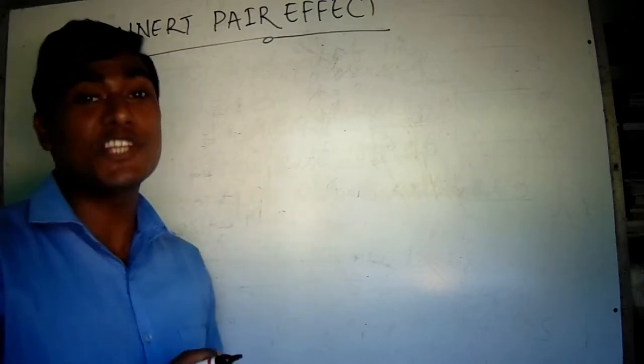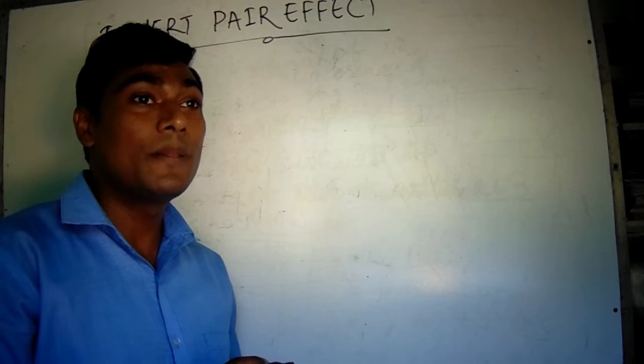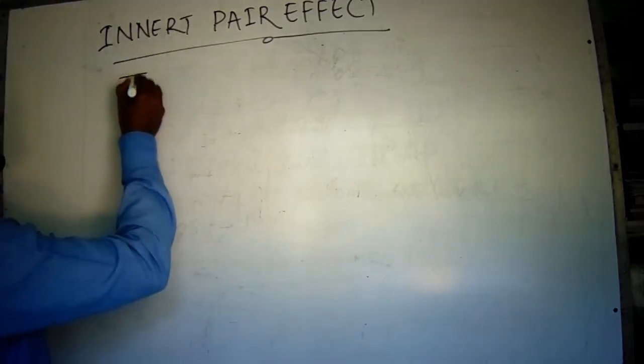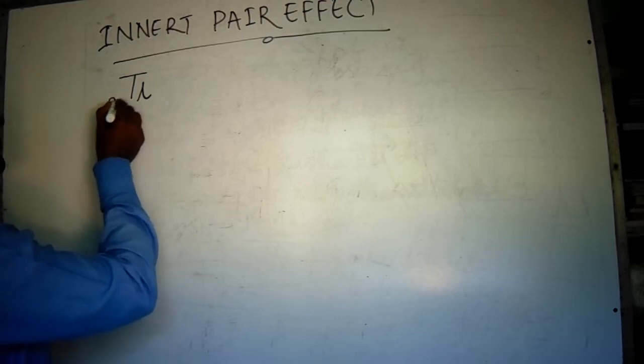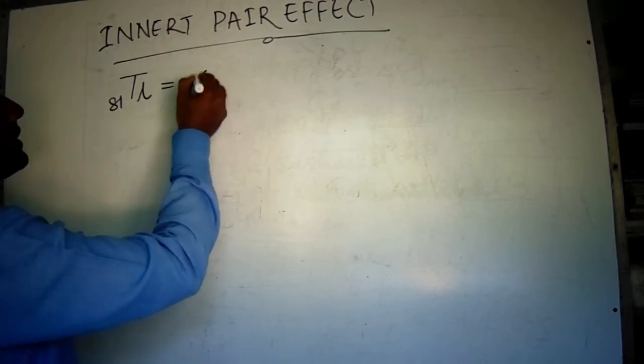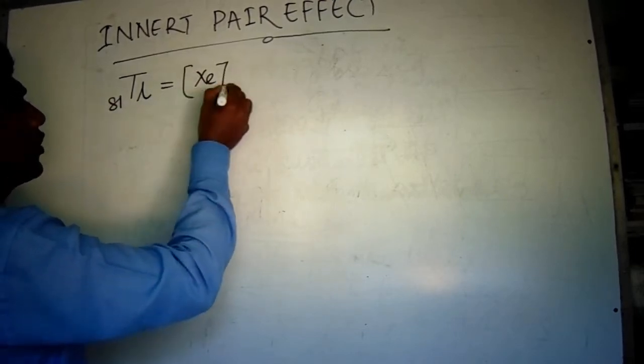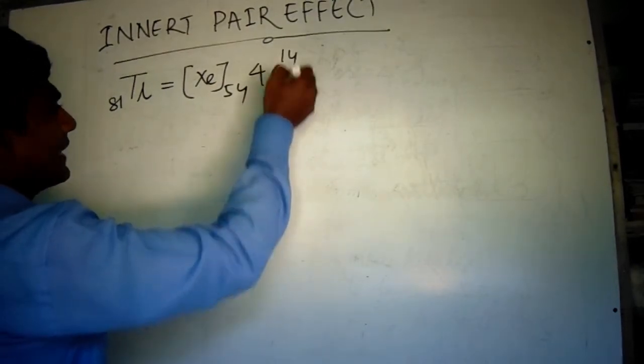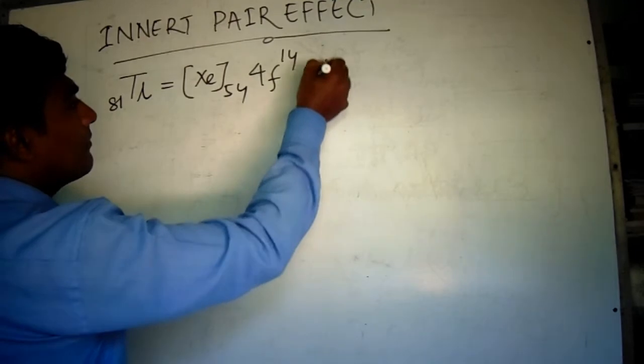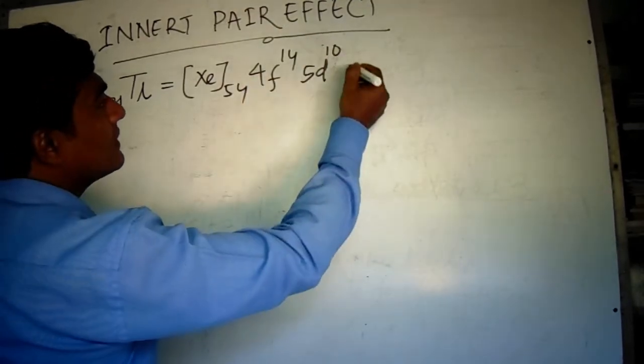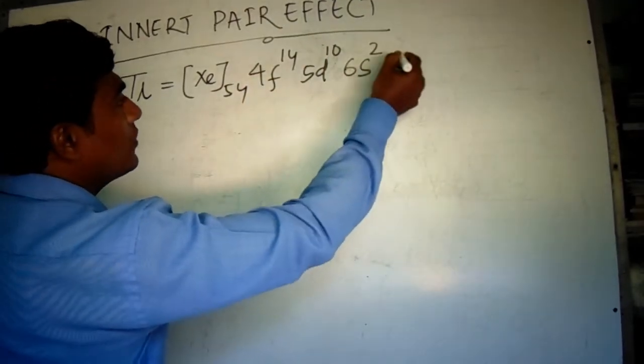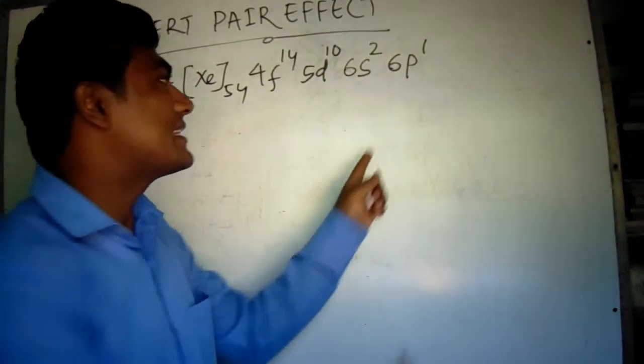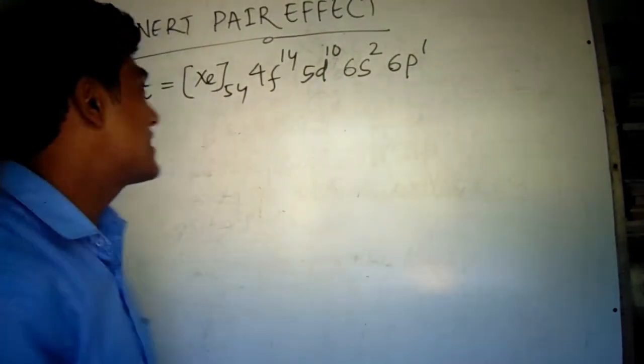Let us write the electronic configuration of thallium: Xenon 54, 4F14, 5D10, 6S2, 6P1. Highest principal quantum number is 6, since it is in the sixth period.